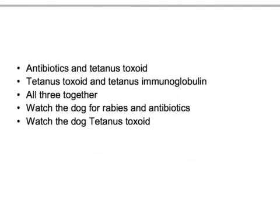Let's discuss the answer. The dog is vaccinated, so no need for rabies vaccination — forget about that. There are three things to look for. First, if the dog is vaccinated, that's fine. If not vaccinated or unknown, give the rabies vaccine. Second, the wound is dirty, so start antibiotics — amoxicillin and clavulanic acid for a cat or dog bite. Third, because the wound is dirty, consider tetanus toxoid or tetanus immunoglobulins based on tetanus status.